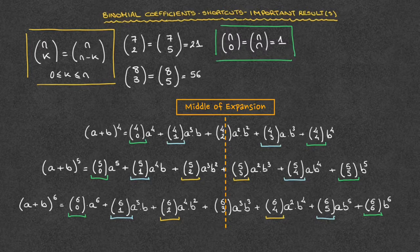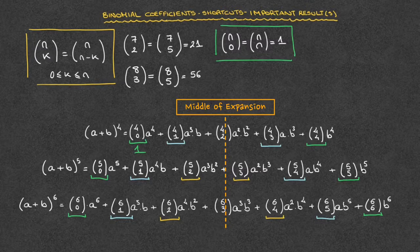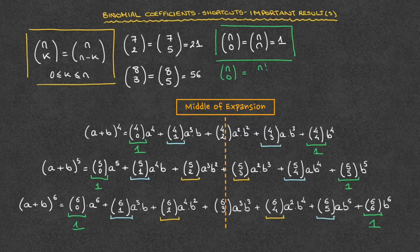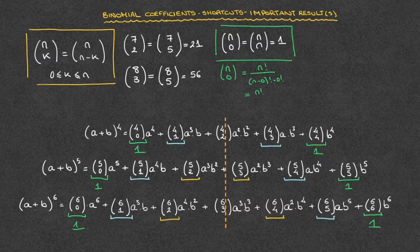Without even thinking, we can go right ahead and state that each of the first and last binomial coefficients in our three expansions are equal to 1. We can quickly prove this: n choose 0 equals n! over (n−0)! times 0!. Since 0! equals 1, this becomes n! over n!, which equals 1. So the first and last coefficients will always be equal to 1.